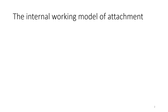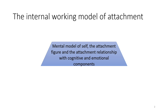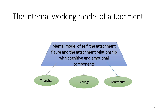The internal working model of attachment develops during the second year of life once a child becomes able to think with symbols. It is a mental representation of the self, the attachment figure and the relationship. It has cognitive and emotional components and influences an individual's thoughts, feelings and behaviours, especially in reciprocal relationships.